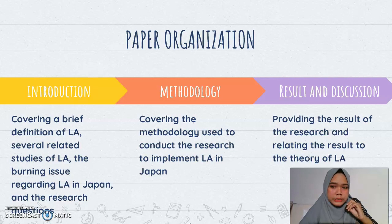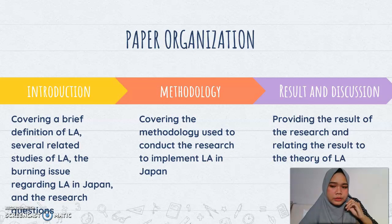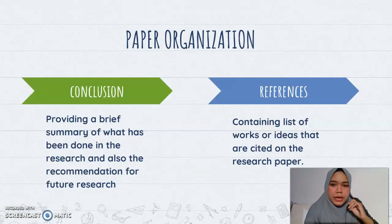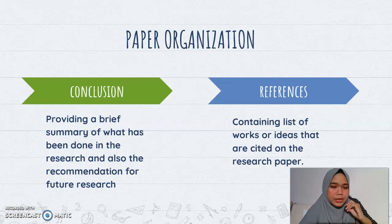The paper's organization is elaborated into five points: the introduction, which covers a brief definition of LA, several related studies of LA, the burning issue regarding LA in Japan, and the research questions; the methodology used to conduct the research to implement LA in Japan; the results and discussions; the conclusion, which provides a brief summary and recommendations for future research; and lastly, references containing lists of works cited in the research paper.